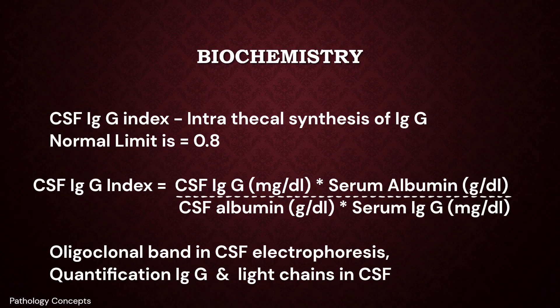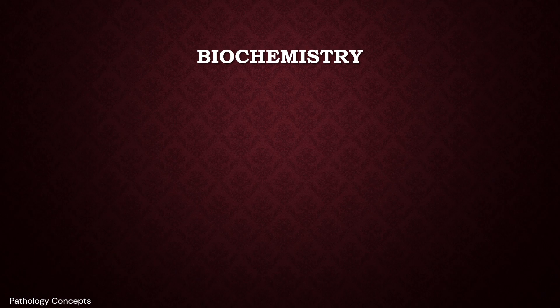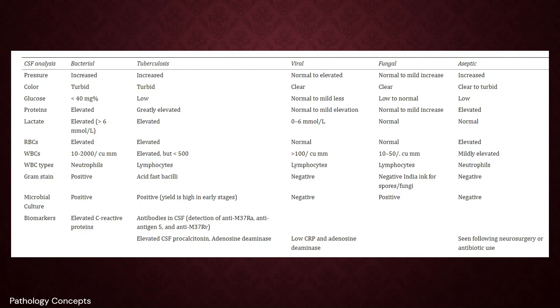Other tests available include detection of oligoclonal bands in CSF electrophoresis, quantification of IgG, and quantification of light chains in CSF. A comparison table covers bacterial, tuberculosis, viral, fungal, and aseptic pathology, giving approximate CSF parameter values for each condition.